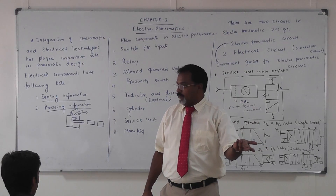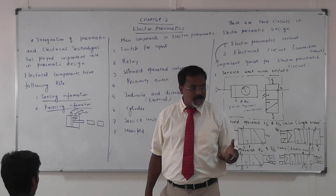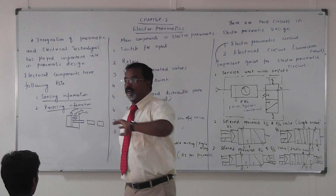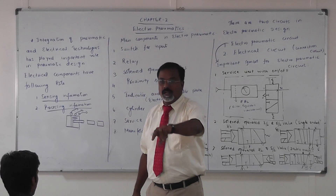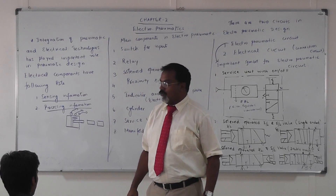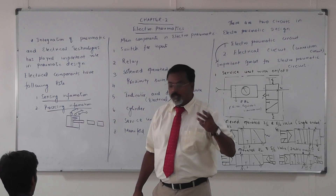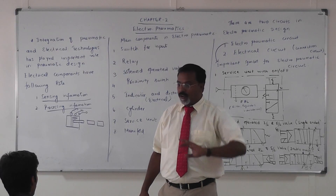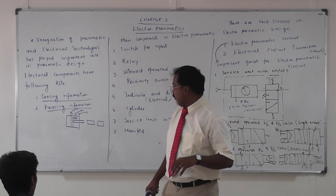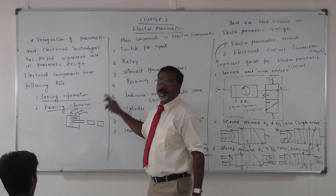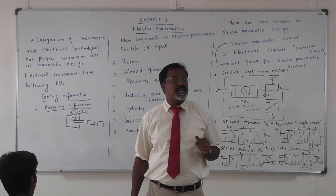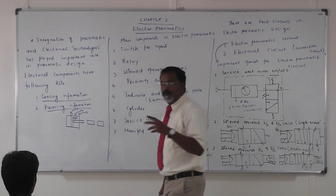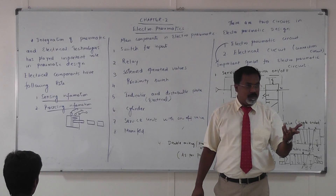If you operate the circuit like that, AND gate logic is satisfied. Similarly, for OR gate logic — if you press any one of the switches, the electrical signal goes to the solenoid operated directional control valve, which opens and allows air to flow. This satisfies OR gate (shuttle valve) logic. That's how you can perform processing information using electrical signals.